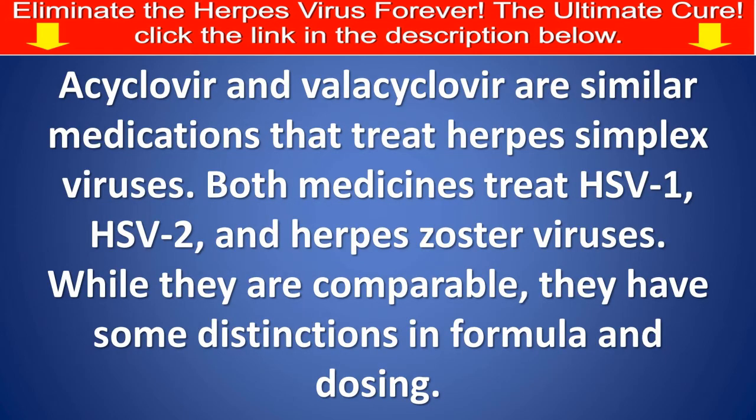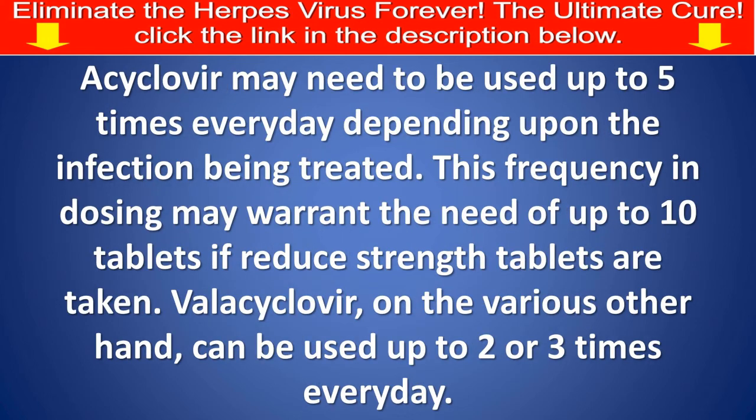Acyclovir and valacyclovir are similar medications that treat herpes simplex viruses, including HSV-1, HSV-2, and herpes zoster. While they are comparable, they have some distinctions in formulation and dosing. Acyclovir may need to be used up to 5 times every day, which may require up to 10 tablets if lower-strength tablets are taken. Valacyclovir, on the other hand, can be used 2 or 3 times every day.